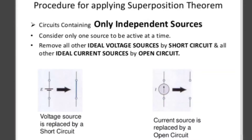Why is the voltage source short-circuited? Because in a short circuit, voltage will be zero. Hence, we replace the voltage source by a short circuit. Whereas, we replace the current source by an open circuit. In an open circuit, current will be zero. Hence the superposition theorem requires: when replacing a current source, we open-circuit it. If you open the current source, then it acts as an open circuit.